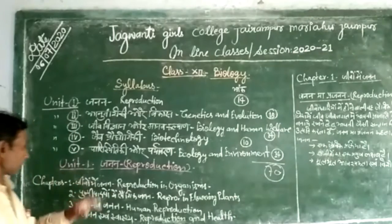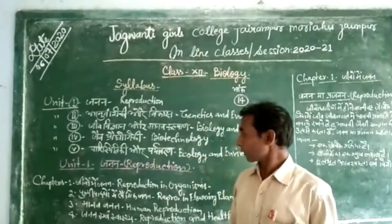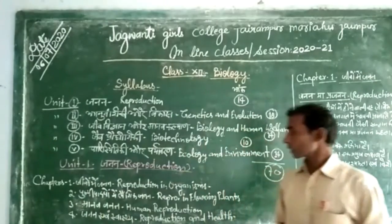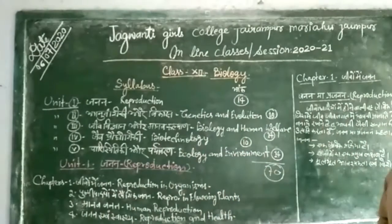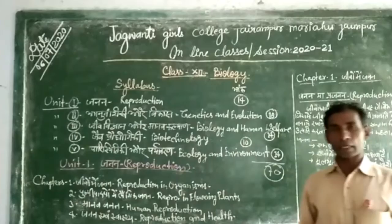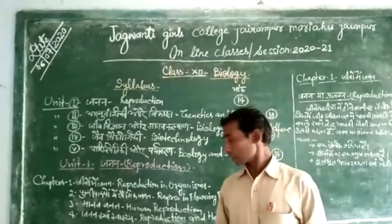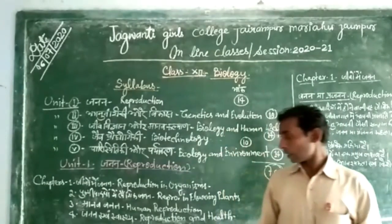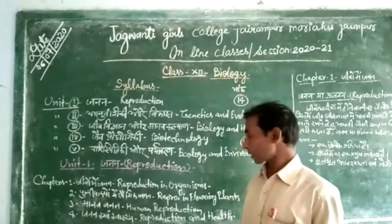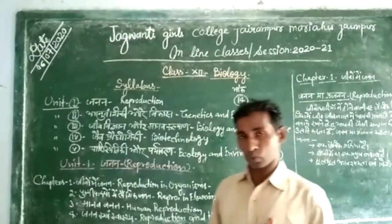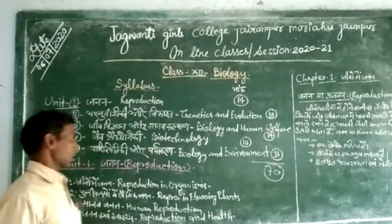The first chapter is Reproduction in Organisms. The second chapter is Reproduction in Flowering Plants. The third chapter is Human Reproduction. The fourth chapter is Reproduction and Health.